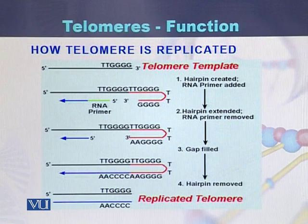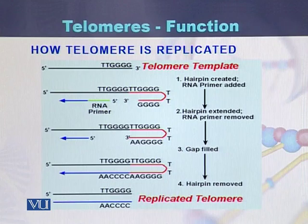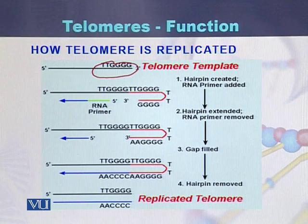The same sequence pattern is seen in slime mold, Tetrahymena, and Trypanosoma. Here is an example of how telomeres are replicated, using the template sequence of the telomere: double-T, double-G, and double-G.